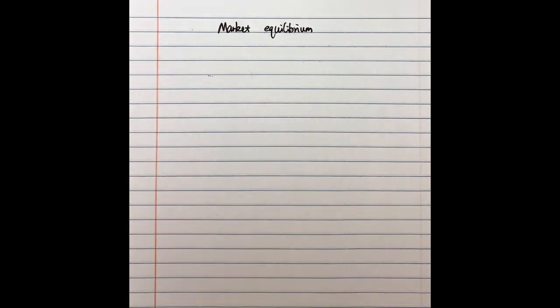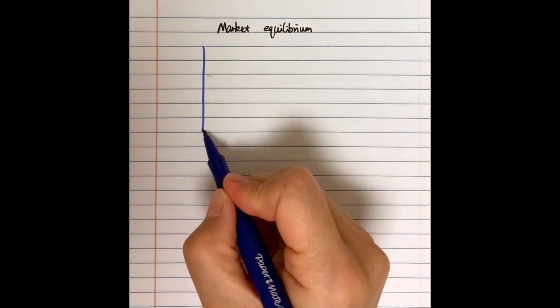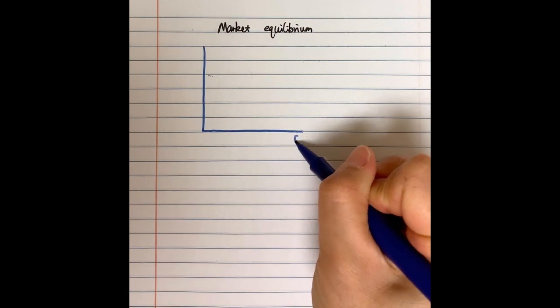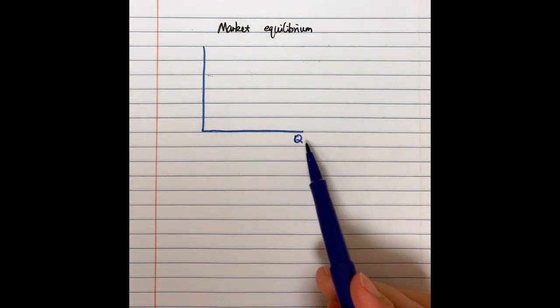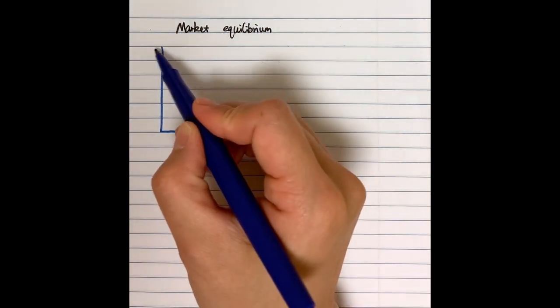Hello. In this video we would like to talk about how we can reach the market equilibrium. I will show you this through a very simple example. We will have our demand curve and supply curve — quantity of goods on the horizontal axis and price of goods on the vertical axis.